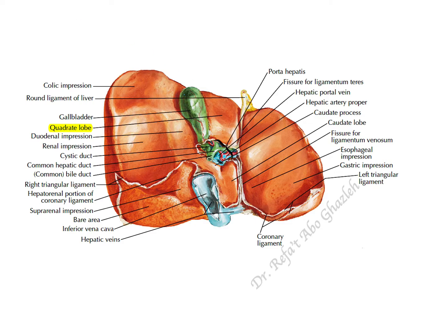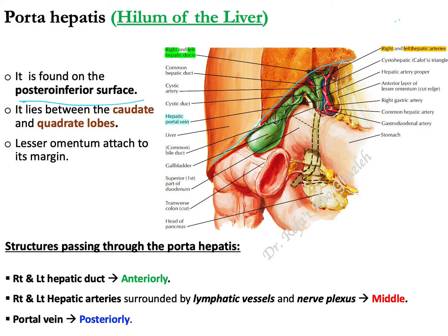If you look at the porta hepatis you will see a couple of structures. I'll take this anterior view of the porta hepatis to make it clearer. Here is the porta hepatis — the hilum of the liver. Most anteriorly there are the right and left hepatic ducts, shown in green.